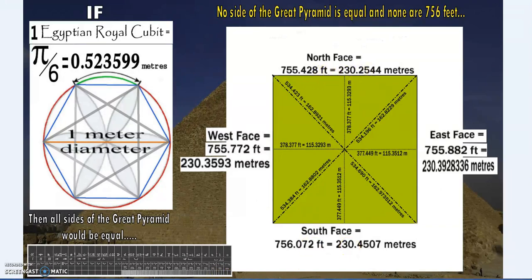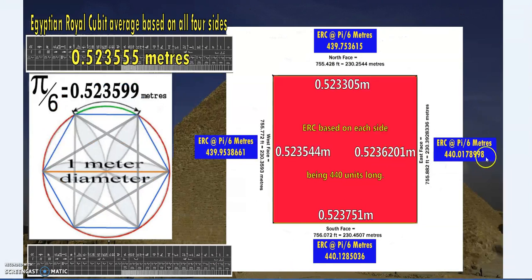If it's often said exactly pi over 6 meters, then we find that no one side is exactly 440 Egyptian royal cubits. As an average, the Egyptian royal cubit is very very close—literally the width of a hair.